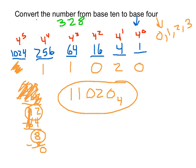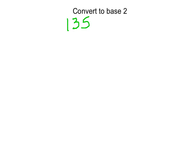Let's look at another example. We're going to convert a number to base 2. We're given the number 135. If we don't see a little subscript number, we assume it's base 10. So 135 in base 10 represents one group of 100, three groups of 10, five groups of 1, and we want to convert this to base 2.